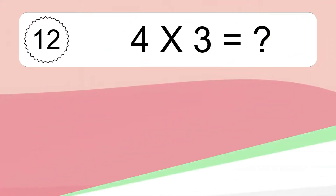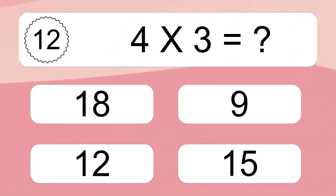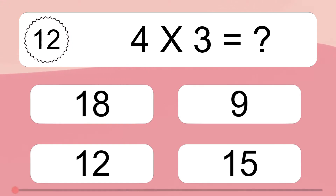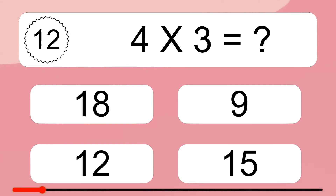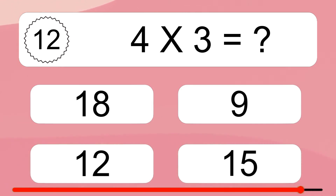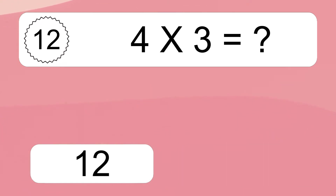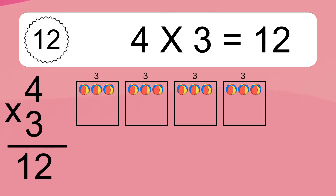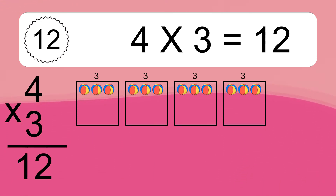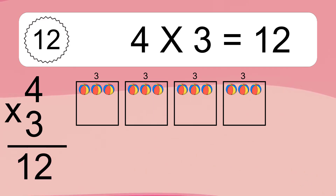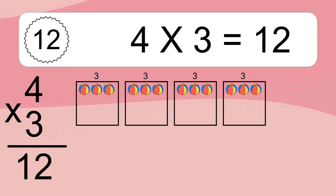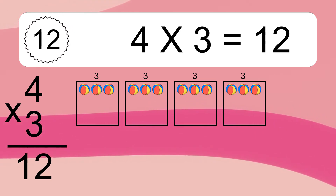4 times 3 equals what? 4 times 3 equals 12. We have 4 boxes, and each box has 3 colorful balls inside. If you count all the balls in all the boxes together, you will have 4 times 3 balls. This equals 12 balls.